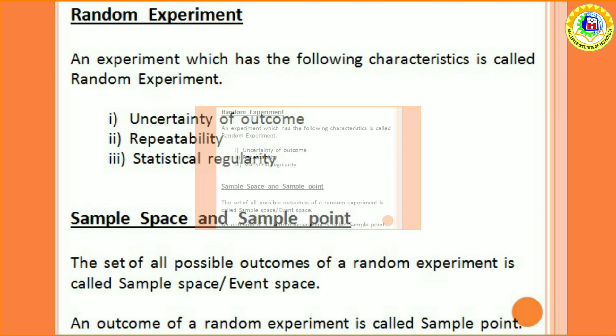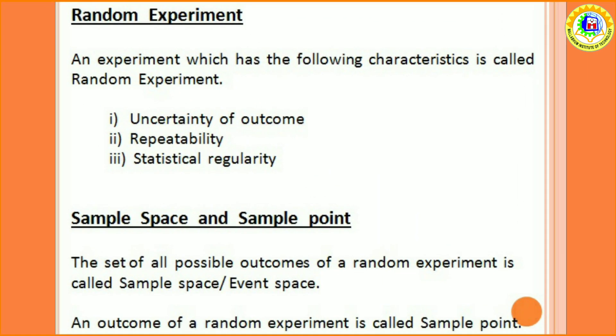Next, sample space and sample point. The set of all possible outcomes of a random experiment is called sample space or event space. And particular outcome of a random experiment is called sample point.